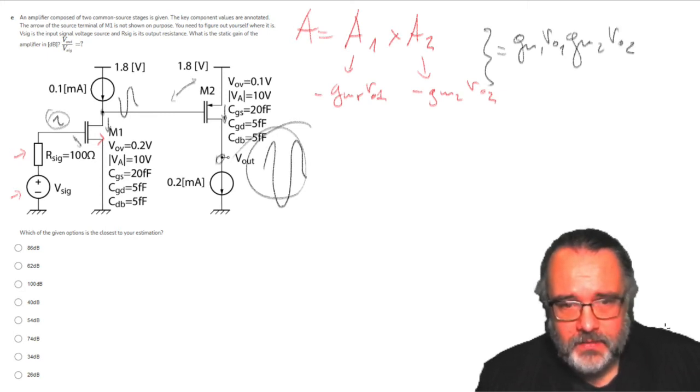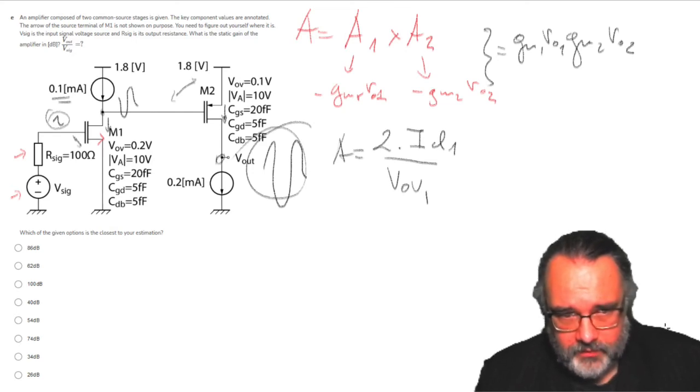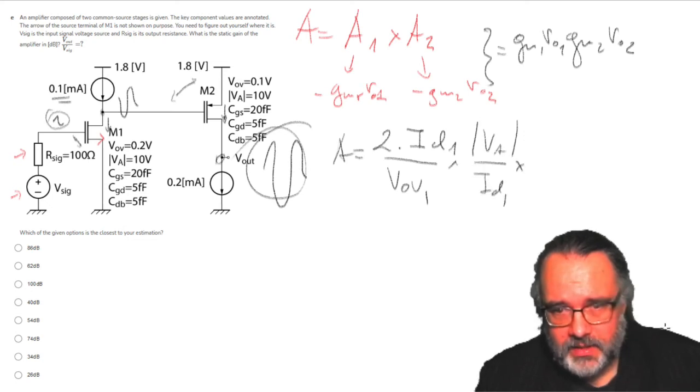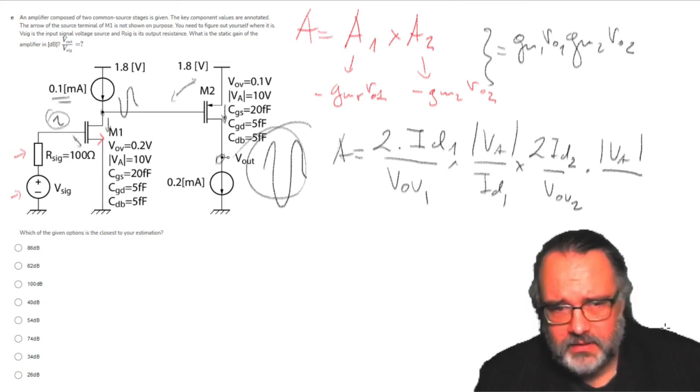So what is GM1? GM1 is two times the drain current I-drain1, this 0.1, divided by the overdrive voltage V-overdrive1, the V-overdrive of this voltage. Now times R-out1. R-out1 is the early voltage divided by the current. And now times GM2 R-out2, exactly the same formulas we are using, just that the second current we have to take into account, and the early voltage is the same, divided by the drain current.